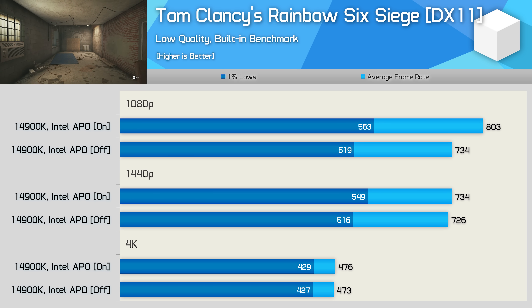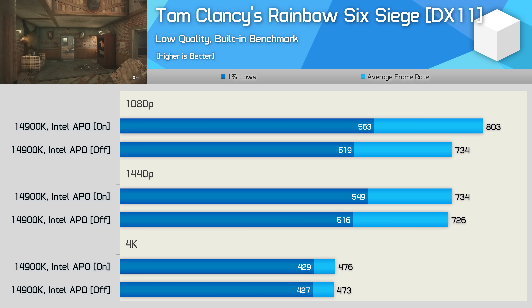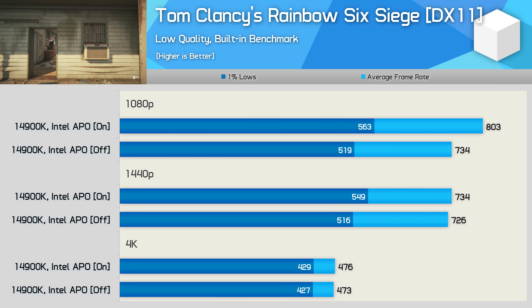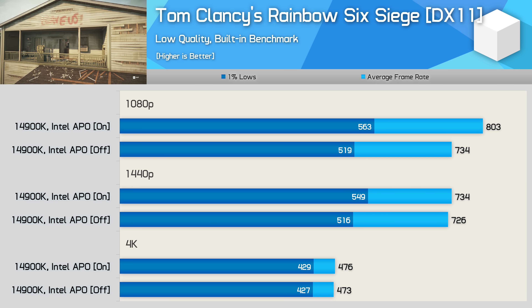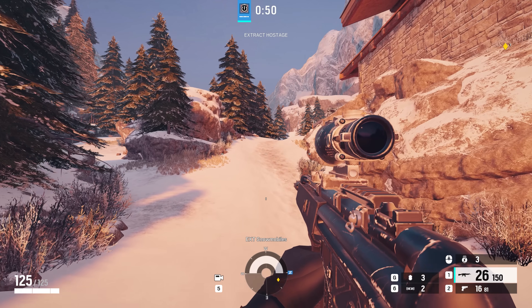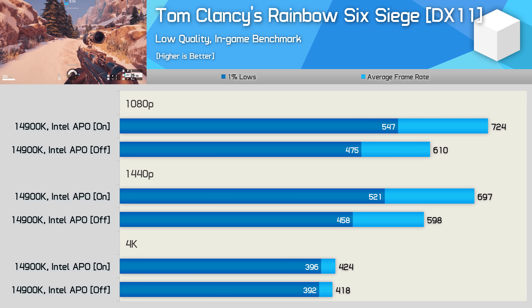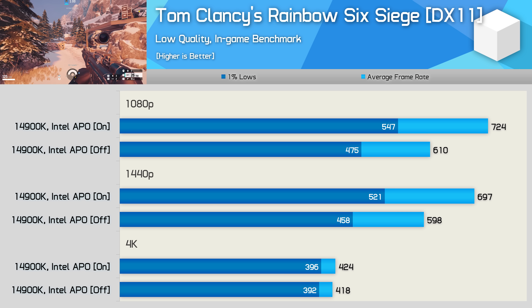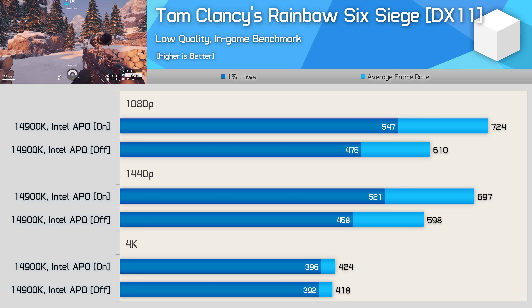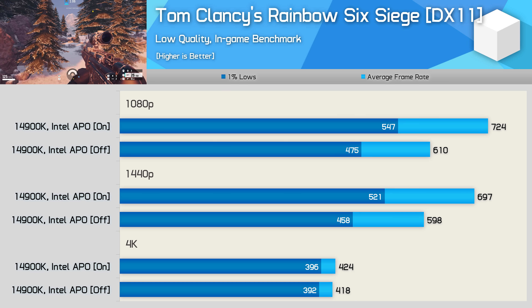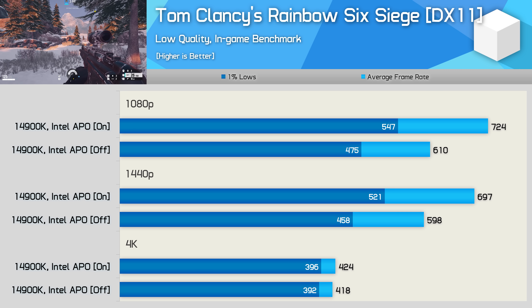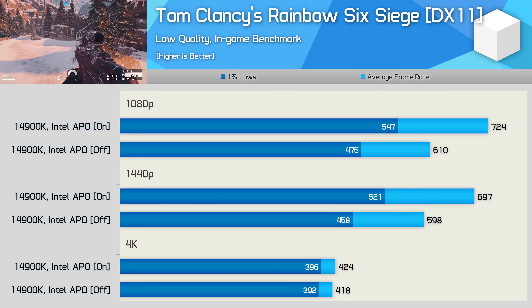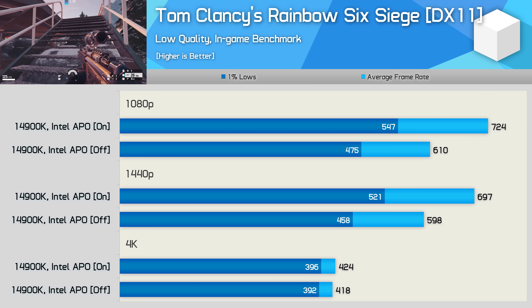I should stress that all Rainbow Six Siege results are based on a three-run average, as the built-in benchmark is very unreliable with quite extreme run-to-run variance. The in-game testing is far more consistent, and here we saw an impressive 19% uplift when enabling APO, taking us from 610 FPS to 724 FPS — a phenomenal performance gain. Even at 1440p we're looking at a 17% performance uplift, so huge gains there. By the time we reach 4K, the data is heavily GPU-limited, so APO has no chance of boosting frame rates there.